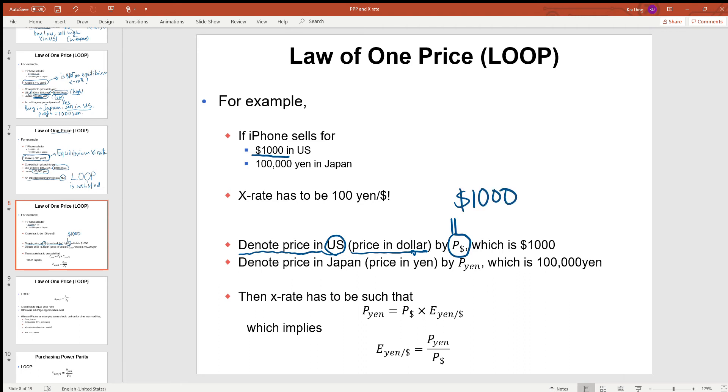If we denote the price of the iPhone in Japan, or the price of the iPhone in yen units, by P yen, which turns out to be a hundred thousand Japanese yen.